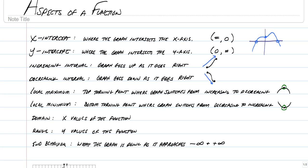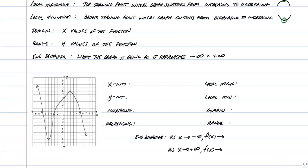Finally, we have end behavior, and that's what the graph is doing at the ends of the graph — all the way to the right, all the way to the left. That's the only time you kind of read as you're going to the left for negative infinity, but we'll talk about that in more detail in a little bit. This is all going to make a lot more sense if we look at graphs, so let's do that.